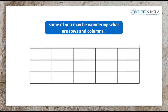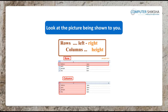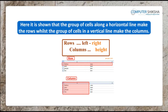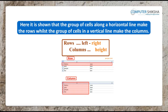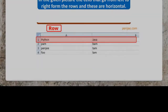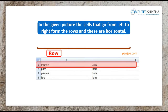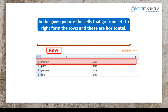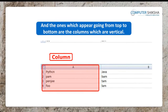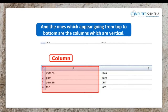Some of you may be wondering what are rows and columns. Look at the picture being shown to you. Here, it is shown that the group of cells along a horizontal line makes the rows, whilst the group of cells in a vertical line make the columns. The cells that go from left to right form the rows and these are horizontal. The ones which appear going from top to bottom are the columns which are vertical.